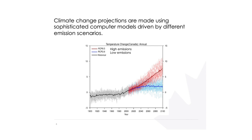The temperature change projected for Canada under those two scenarios is shown in this figure. The blue curve shows what would happen under the low emission scenario — stabilizing at a couple degrees above present. Under the high emission scenario, we would continue to see temperatures increase more than 7°C or so by the end of this century. That's a primer on projections.